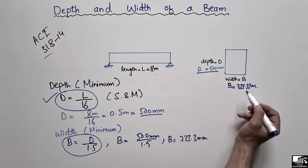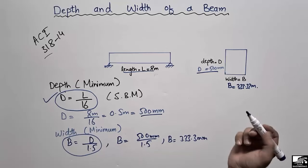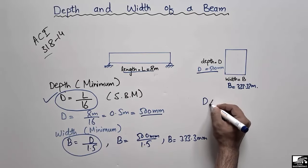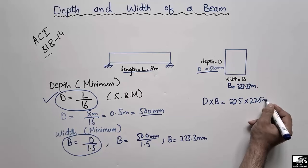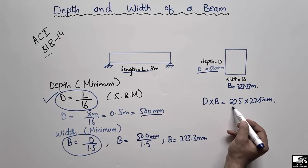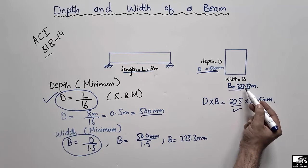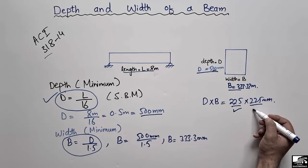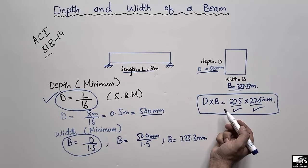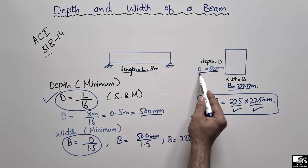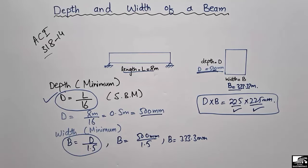So the minimum dimensions are 500 mm depth and 333.3 mm width for a beam of 8 meter length. The minimum requirement for a reinforced concrete beam is that the depth and width should not be less than 225 mm × 225 mm. In our case, the depth is 500 mm and the width is 333.3 mm — both greater than 225 mm, so they are acceptable. This satisfies the code requirement for sufficient resistance to the load on the beam.